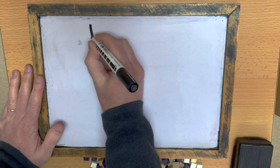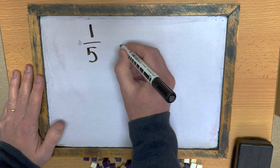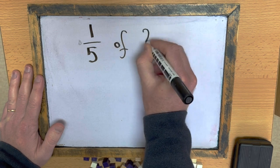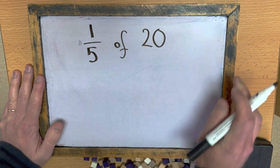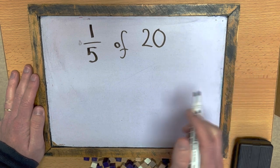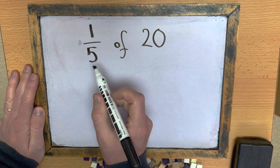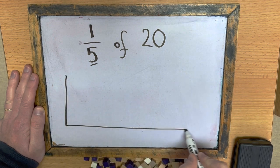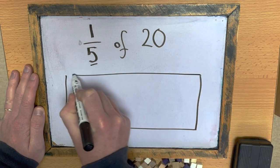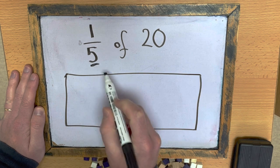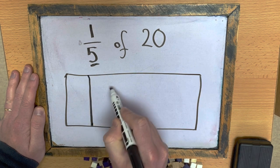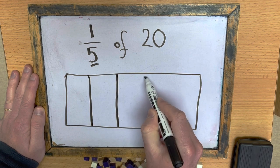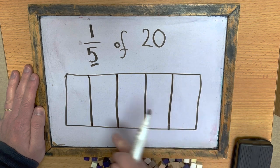So, if I want to find out one-fifth of 20, look at this easy way to find out one-fifth of 20. First I'll just look at the denominator, which is a 5. So, I'm just going to draw a rectangle that has 5 sections. 1, 2, 3, 4, and 5.